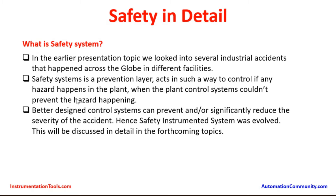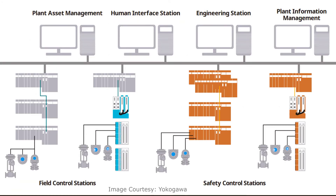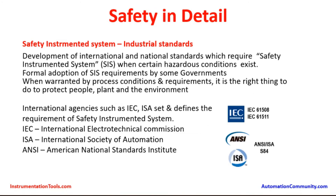Better-designed control systems can prevent and significantly reduce the severity of accidents. Hence, safety instrumented systems were evolved. We are going to discuss SIS in detail in the forthcoming topics — its implementation, engineering requirements, installation, and commissioning. Development of international and national standards requires safety instrumented systems when hazardous conditions exist. Formal adoption of SIS by some governments, when warranted by process conditions, is the right thing to do to protect people, plant, and environment.